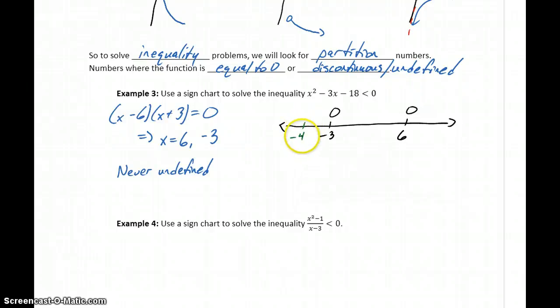For instance, we could look at negative 4 as one of our test points, 0, or 7. Again, we could use any other numbers as long as they just fill those open intervals in between those numbers.